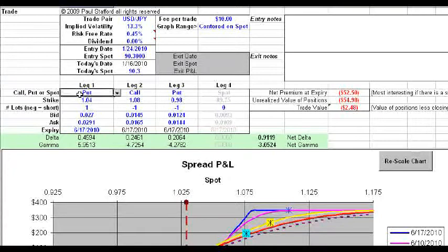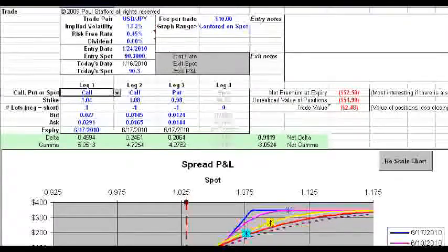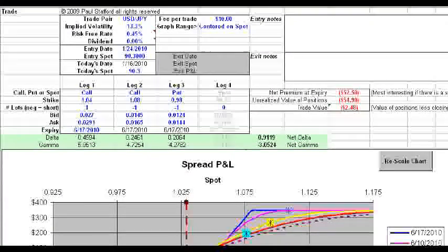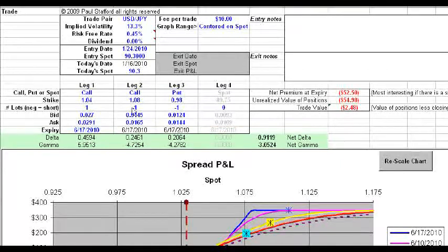So the first thing that I want to do is go ahead and put in a long call. Now what I want to do is I'm going to select a call just slightly out of the money, say about 93 or 92, and so we'll put in the strike of 92. We're going to be long one lot. The bid ask is 1.85 and 2.02, and we're going to go for an expiry of the 24th of May.